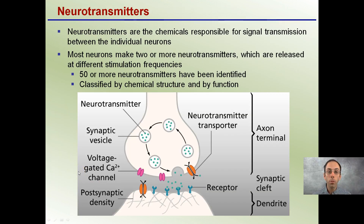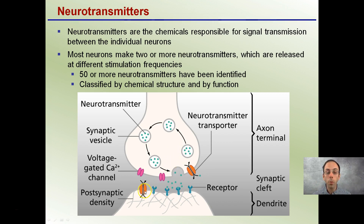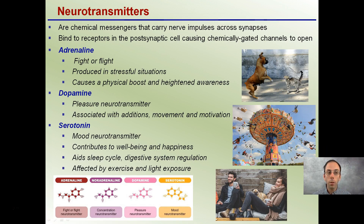Neurotransmitters are chemicals responsible for signal transmission between individual neurons. Most neurons make one or more neurotransmitters, which are released at different stimulation frequencies. While 50 or more neurotransmitters have been identified, I'm only going to cover a couple here. They're classified by their chemical structure and also by their function. It's important to remember that we also have receptors for those neurotransmitters. They're chemicals that carry nerve impulses across the synapse and bind to receptors in a postsynaptic cell, causing chemically-gated channels to open.